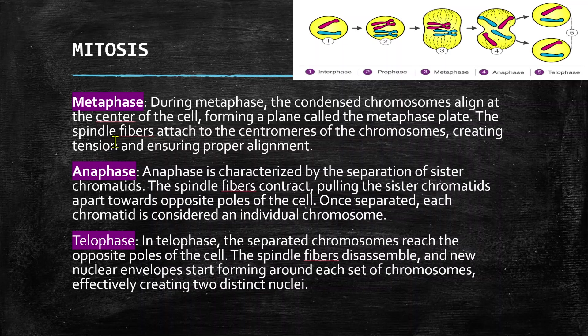After anaphase, we have telophase. In telophase, the separated chromosomes reach the opposite poles of the cell. The spindle fibers disassemble, and new nuclear envelopes start forming around each set of chromosomes, effectively creating two distinct nuclei.